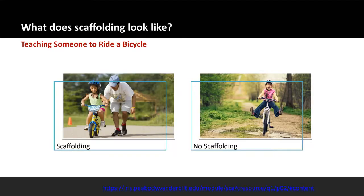Let's look at a non-academic example to illustrate what scaffolding might look like — teaching someone to ride a bicycle. If we use scaffolding, we'd first demonstrate how to ride a bicycle, then start the person out using training wheels so they get a feel for riding. We might gradually raise the training wheels so they aren't constantly on the ground but are still there if needed. Then we determine when the person is ready to remove the training wheels, use a hand to steady the bicycle and walk alongside the rider, and finally let go and let them ride alone. If they fell down, we would add back one of the supportive structures until they're ready to try on their own again.